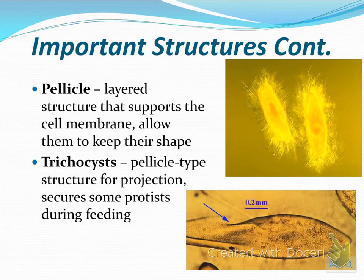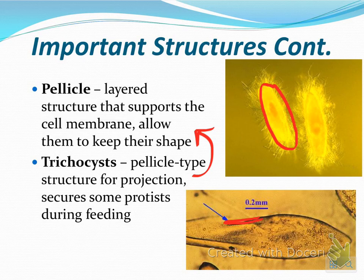Two more unique structures: the pellicle is a layered structure that goes around the cell membrane and allows the protist to keep its shape while floating in water. You also have the trichocyst, which is a pellicle-type structure that projects outward, kind of like a stinger on a stingray. Some protists will secure it into something while feeding so they don't float away. And those are your notes on protists.